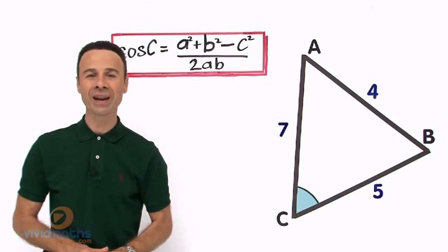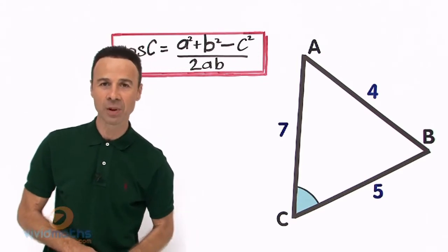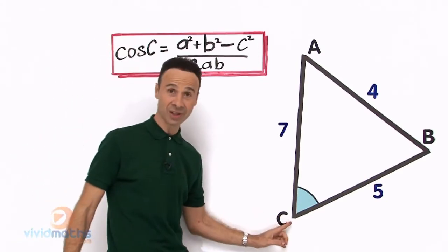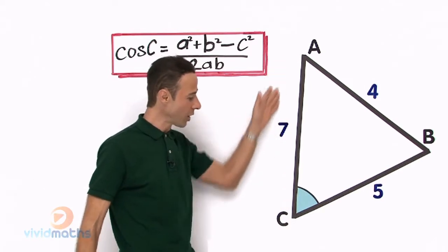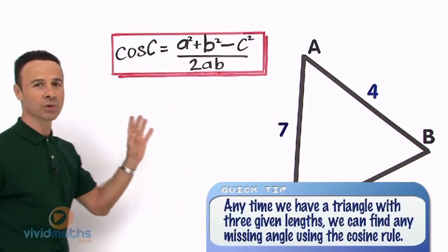This time we are looking for an angle in this particular example, and the angle is angle C down here, or you could call it ACB. Now that is what we are looking for, let us have a look.